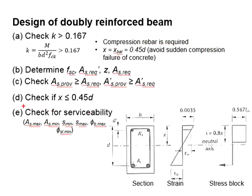Lastly, you will have to check for the serviceability of the member, which includes the aspect of AS maximum, AS minimum, minimum spacing, maximum spacing, maximum bar size, and also the minimum size of the sharing. In comparison to singly reinforced beam, you have to check one more item, which is minimum size of the sharing.